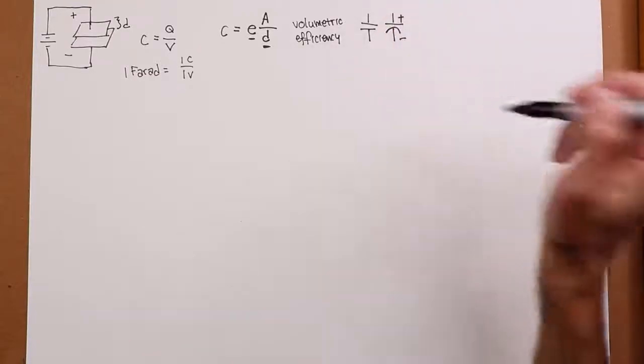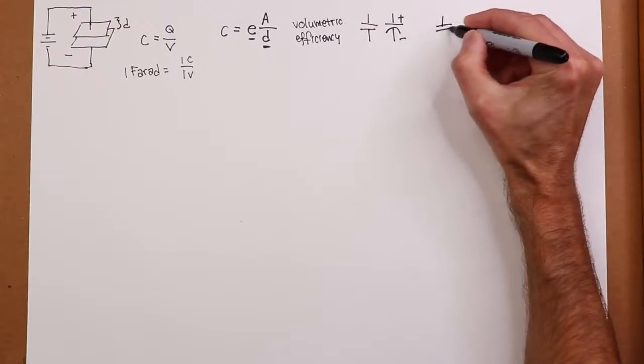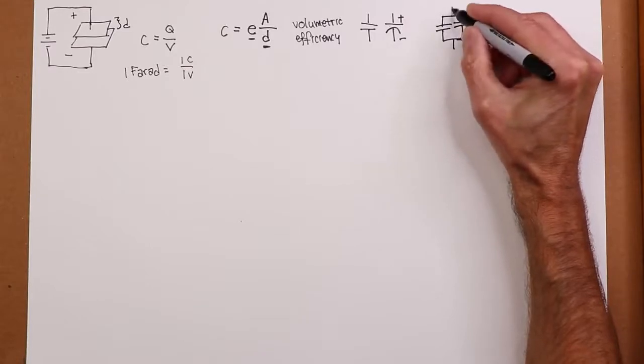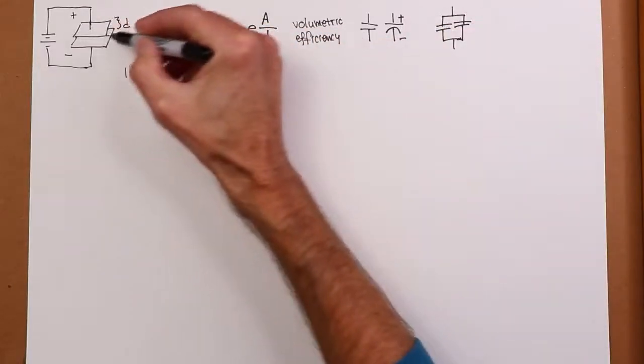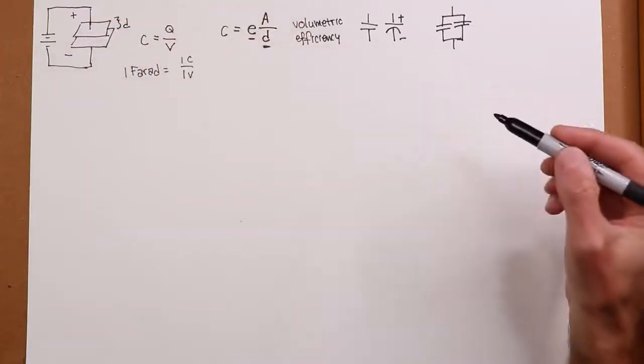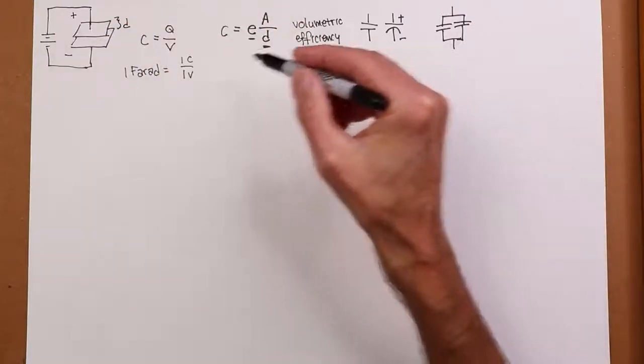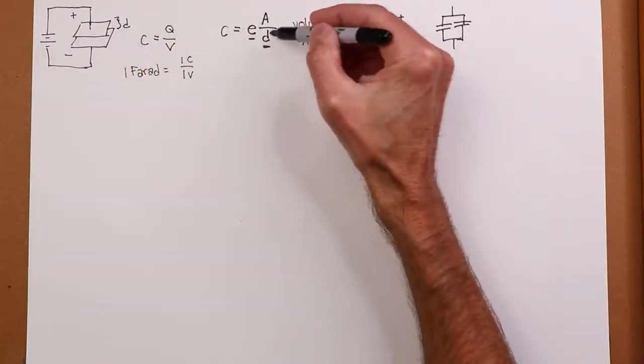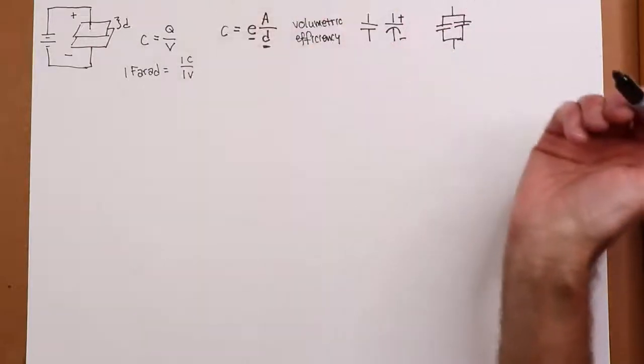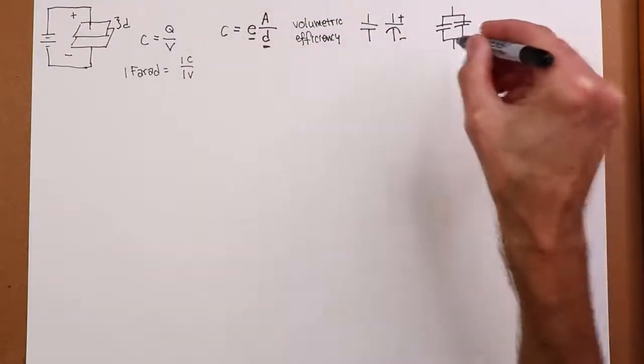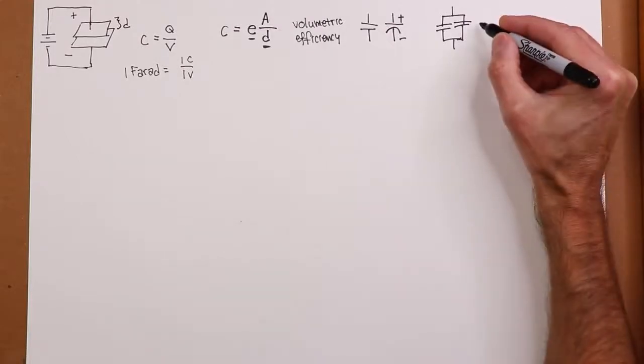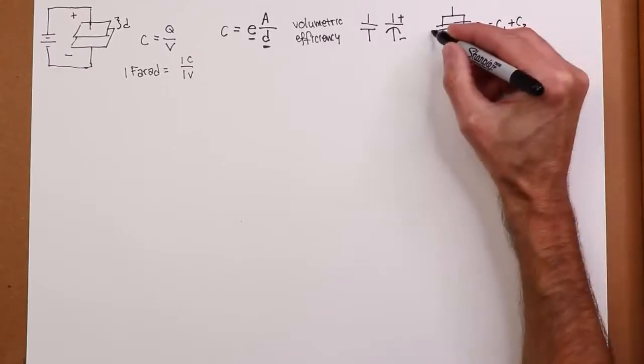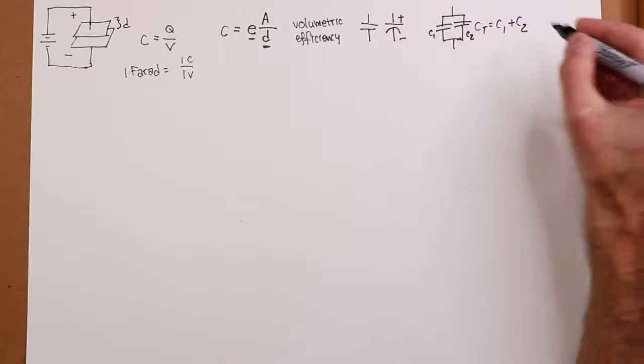Now if you take two capacitors and you put them in parallel, think about this for just a sec. What you're really doing is increasing the plate area. If you had two identical caps, you put them in parallel, it's like you've doubled the area. The distance is the same, the permittivity is the same, so you've doubled the capacitance. So caps in parallel add. In other words, like resistors in series do. So if you had three, four, five, you just keep adding them up.